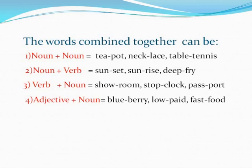Next we have Adjective plus Noun Compounding, that is Adjective Compounding. The combination of words where we have one noun and one adjective. For example: Fast food — 'fast' is an adjective and 'food' is a noun. Or Blueberry — 'blue' is an adjective and 'berry' is a noun.